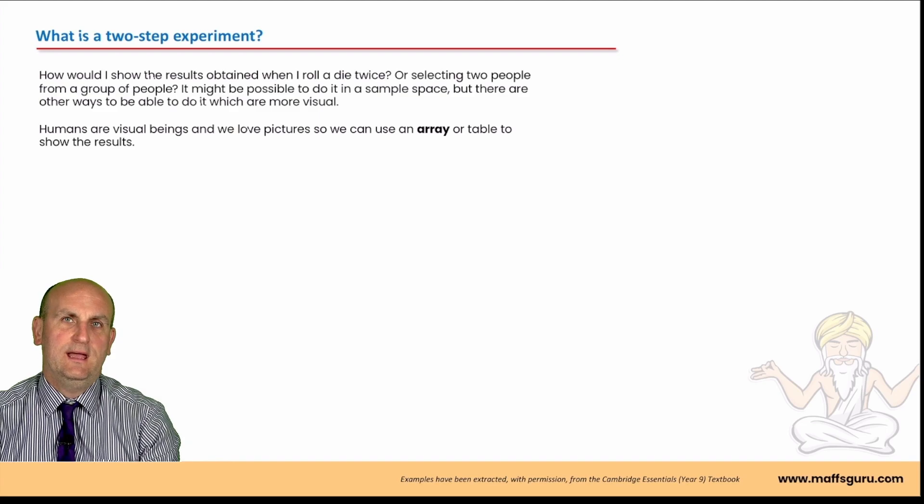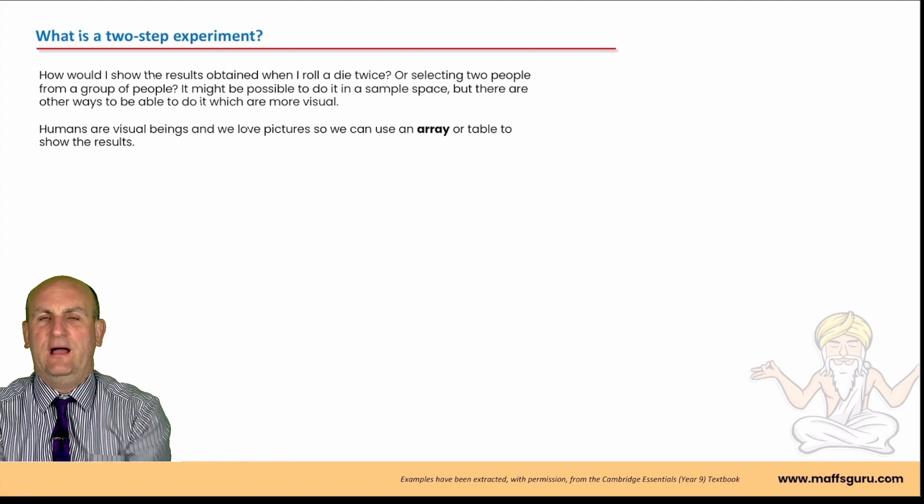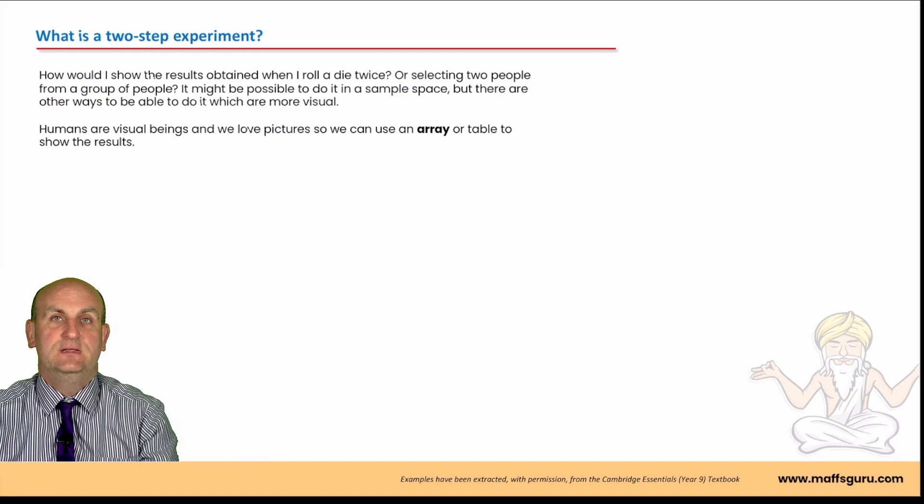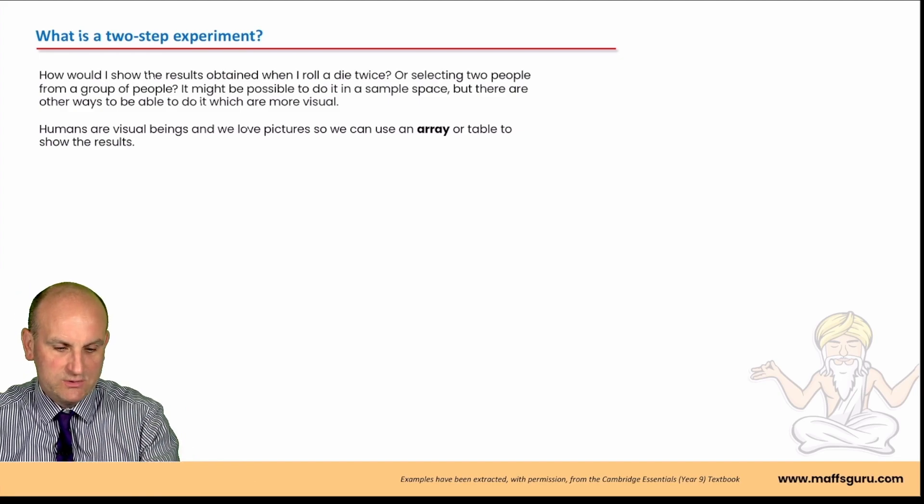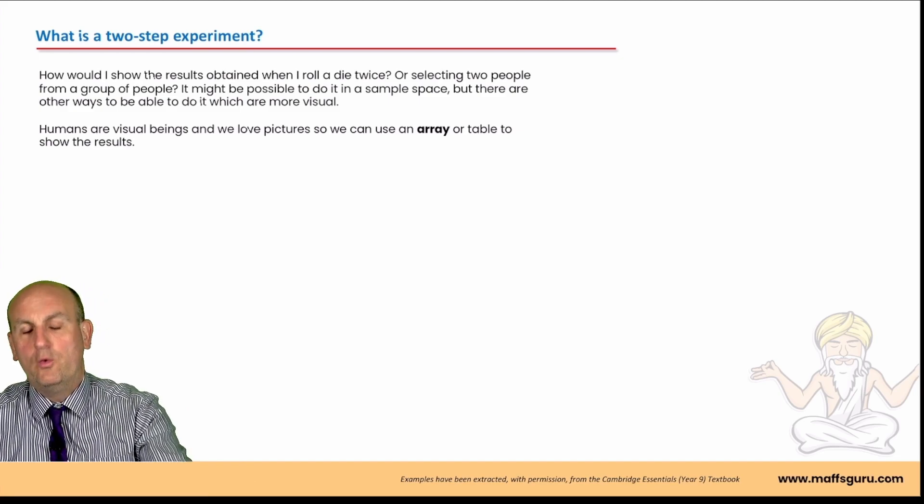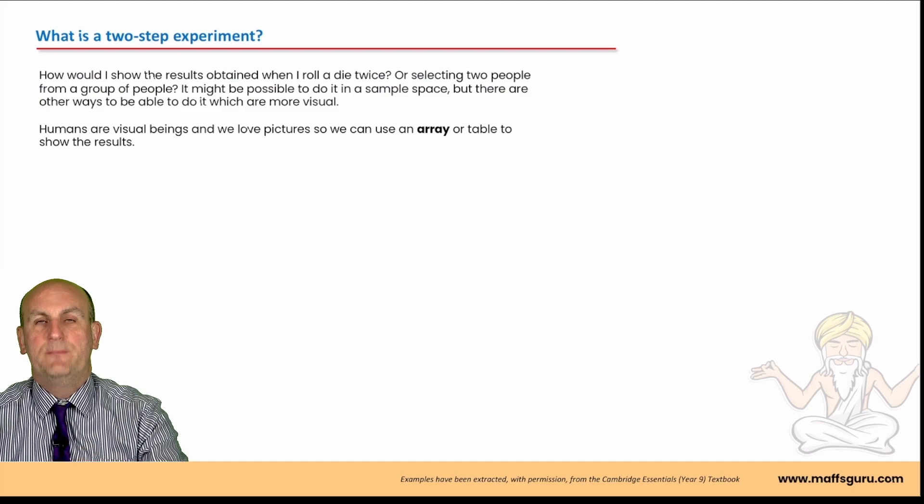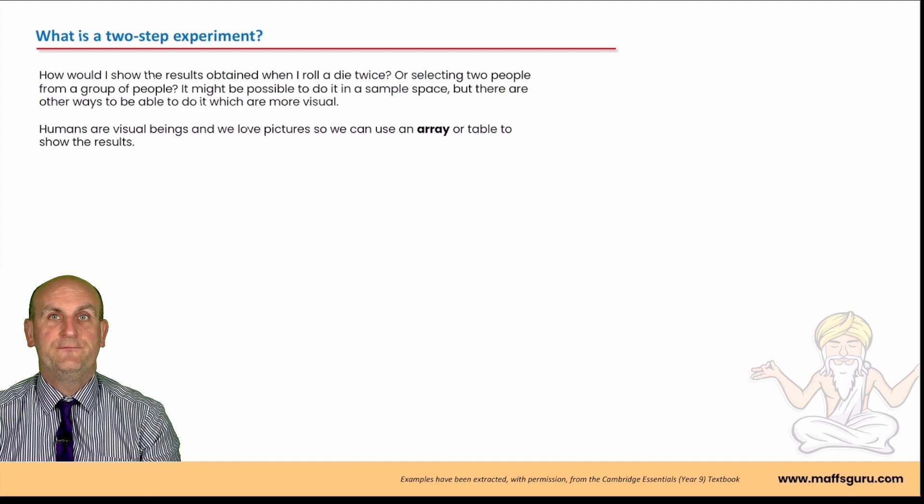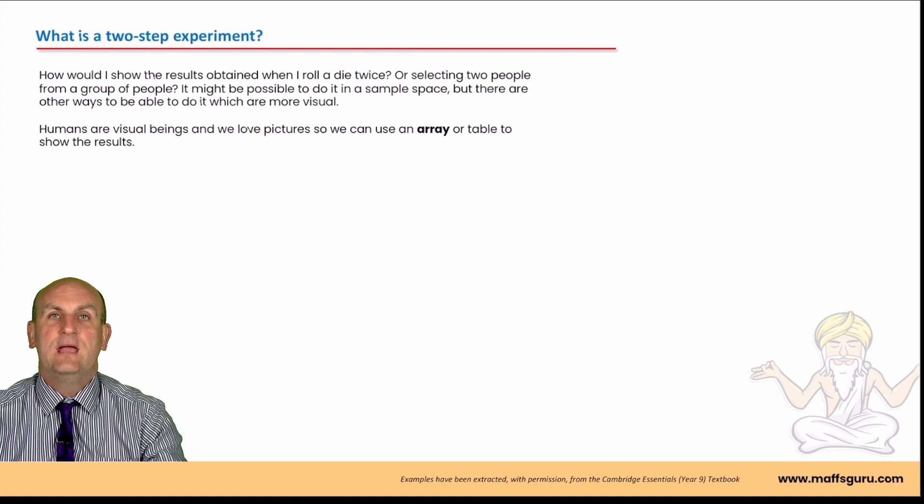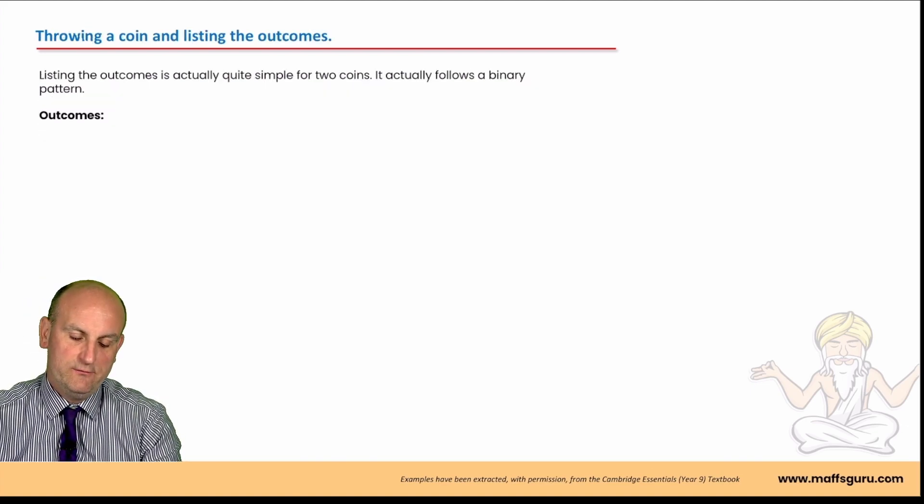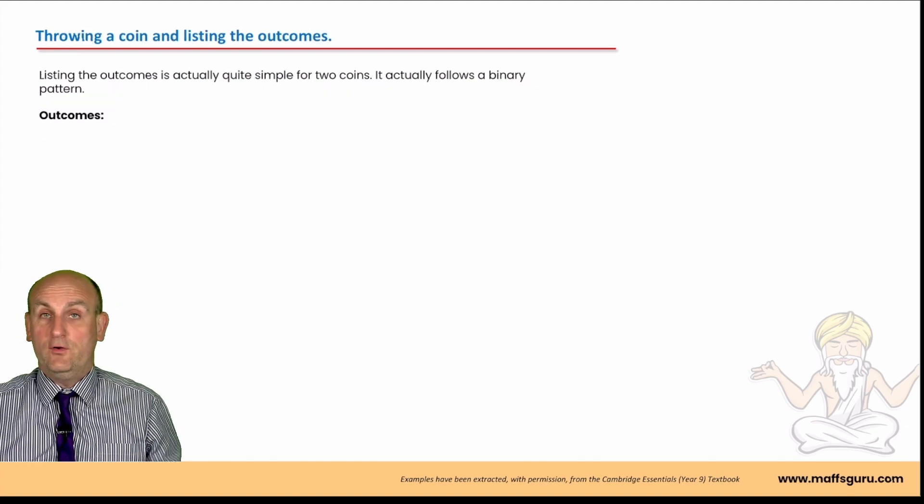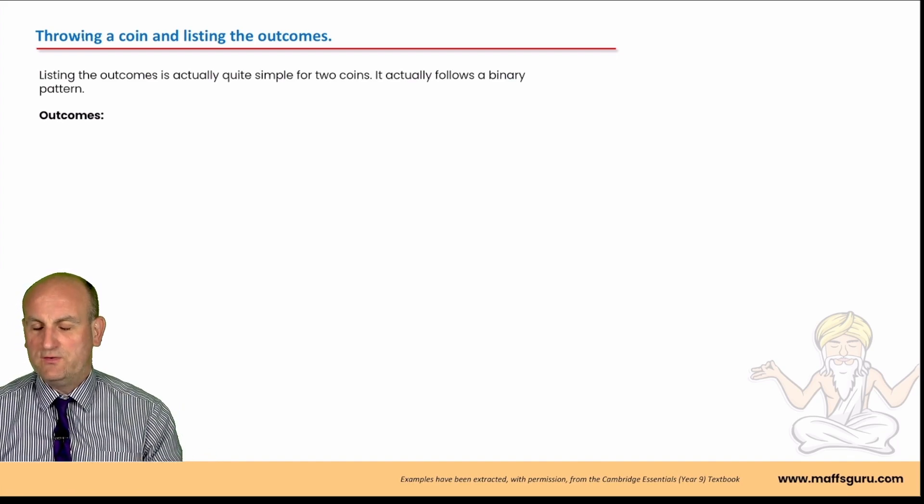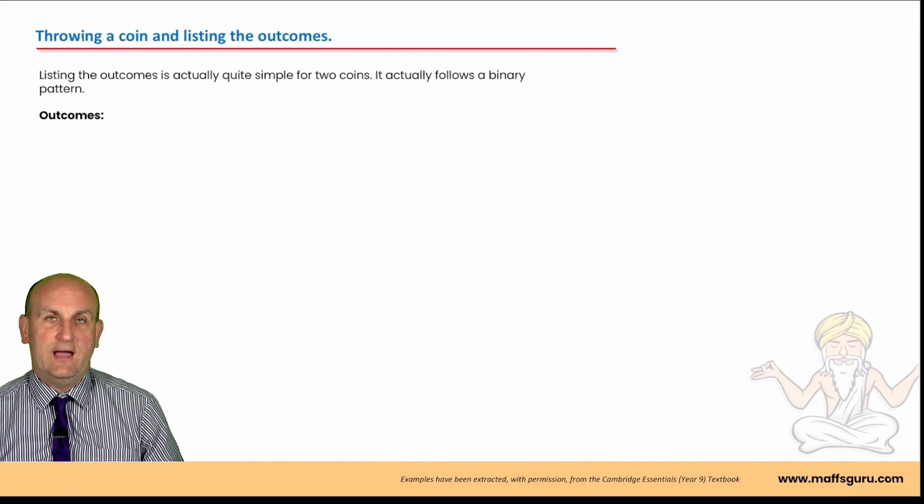But how would we work out what all the possible outcomes were going to be if I did this twice? So, for example, if I roll a die twice and write down all the different ways that numbers can come out of that, how many would I end up with? What about if a coin, I throw that twice? How many different ways are there of doing it? Well, let's look at the coin now.